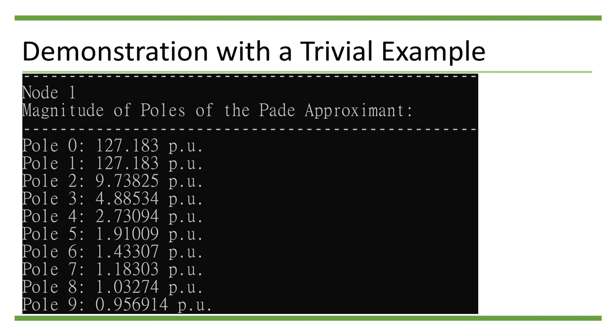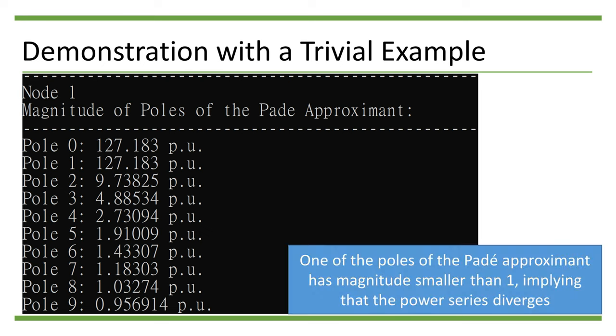In the third part of the output, we can see that there is a pole of the Padé approximant whose magnitude is smaller than 1. This implies that the power series diverges, and there is no solution to the original power flow equation.